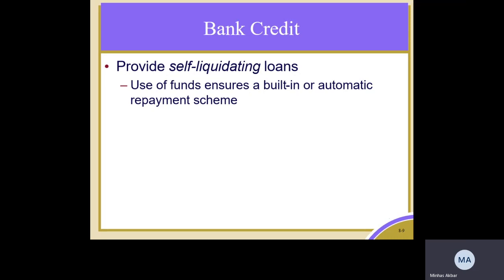Self-liquidating loans, as the name indicates, are repaid from the activity they finance, with interest. The banks and credit providers on average have two-thirds of their credit as short-term. So if a bank has 100 rupees, on average around 66 rupees would be lent as short-term credit.